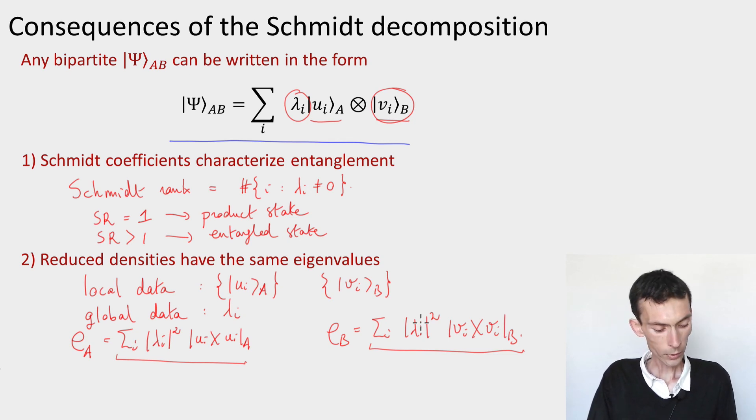Another interesting consequence is that we can determine the Schmidt coefficients and the Schmidt basis that's associated to the A system simply by performing the singular value decomposition of the reduced density on A. Similarly, we can infer again the Schmidt coefficients and the Schmidt basis for B by doing the singular value decomposition of the reduced density on the B system.